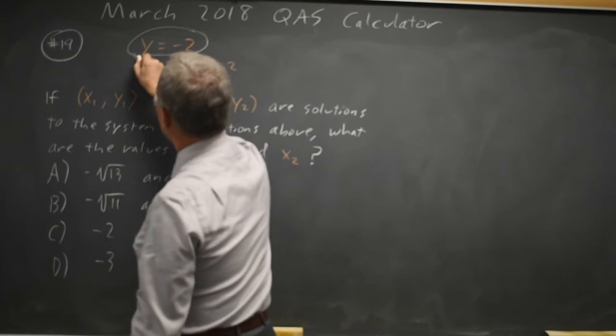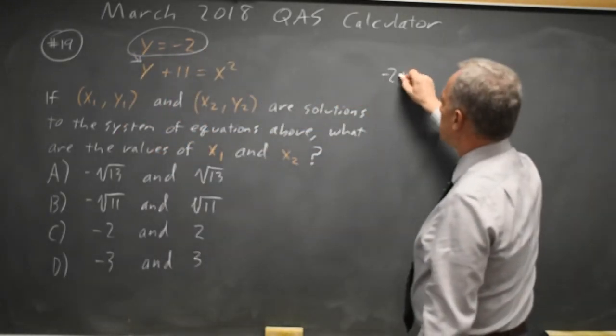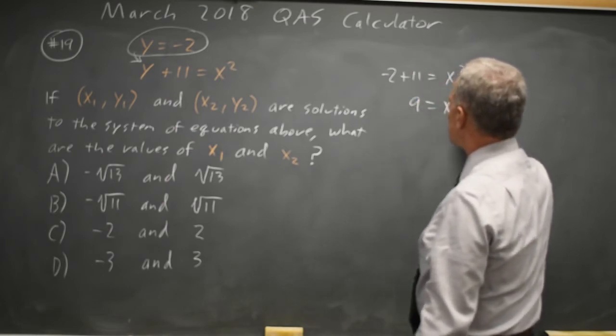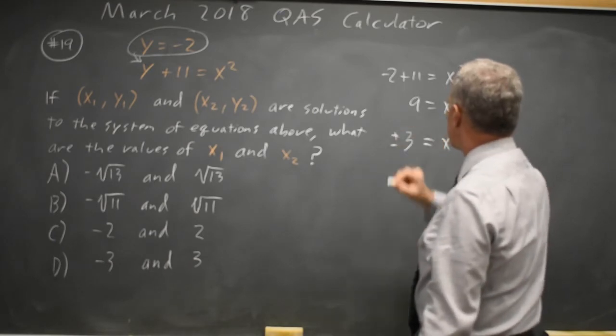I want an equation solved for y, I'm going to substitute that in for y in the second equation. So negative 2 plus 11 equals x squared, 9 equals x squared, square root of both sides, x equals positive or negative 3.